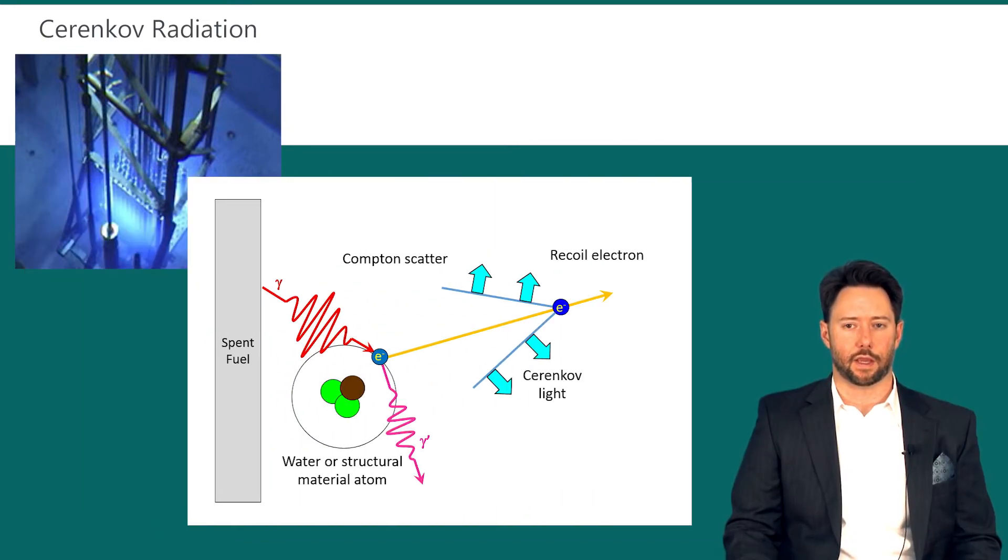If we start with a spent fuel rod or spent fuel assembly, a gamma ray is emitted and it has an interaction with an electron belonging to water or a structural material atom. The interaction that it has is a Compton scatter and the gamma scatters off and continues with a new energy and wavelength. But the electron is ejected.